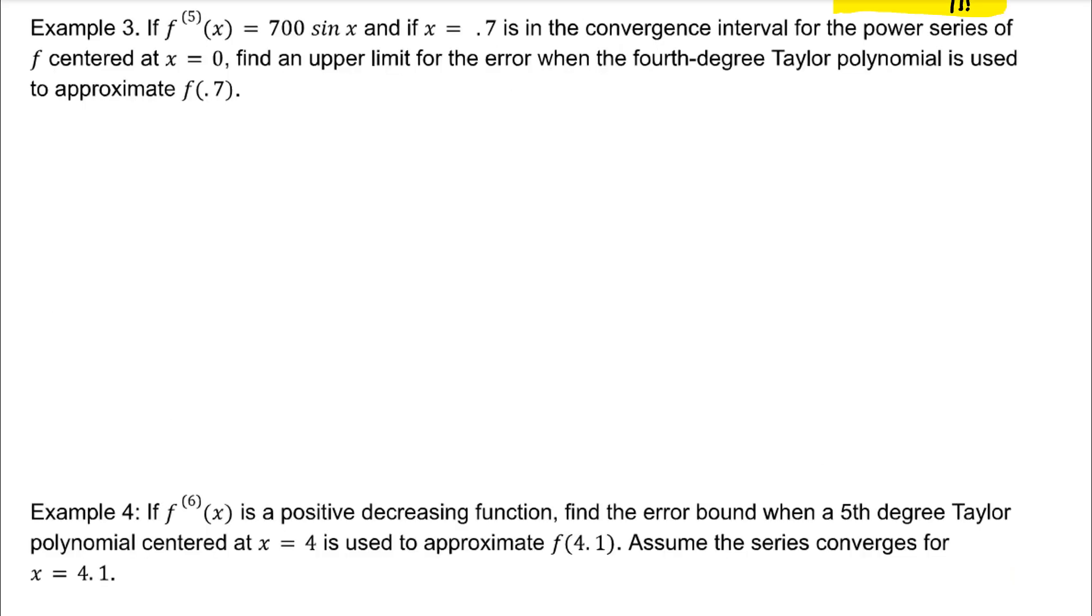For example 3, the fifth derivative of x is equal to 700 sin x. That's really nice. We don't have to derive anything. And if x equals 0.7 is in the convergence interval for the power series of f centered at x equals 0, find an upper limit for the error when the fourth degree Taylor polynomial is used to approximate f of 0.7. We do not need to write out a Taylor polynomial in order to find this approximation. But first let's get our important values n, c, and x. That means that z will need to be between 0 and 0.7.